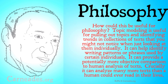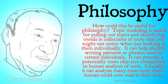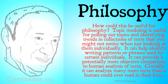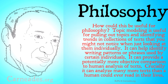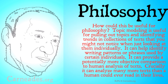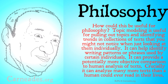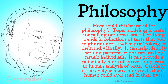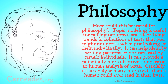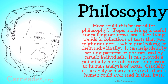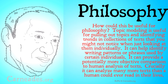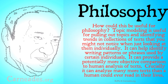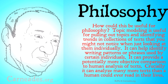How could this be useful for philosophy? Topic modeling is useful for pulling out topics and identifying trends in collections of text that you might not notice when just looking at them individually. It can help you identify writing patterns or phrases used by certain individuals. It can provide potentially more objective comparisons of texts than human analysis, and critically, it can analyze many more texts than a human could ever read in their life, capturing stories told across many different texts without actually reading them.